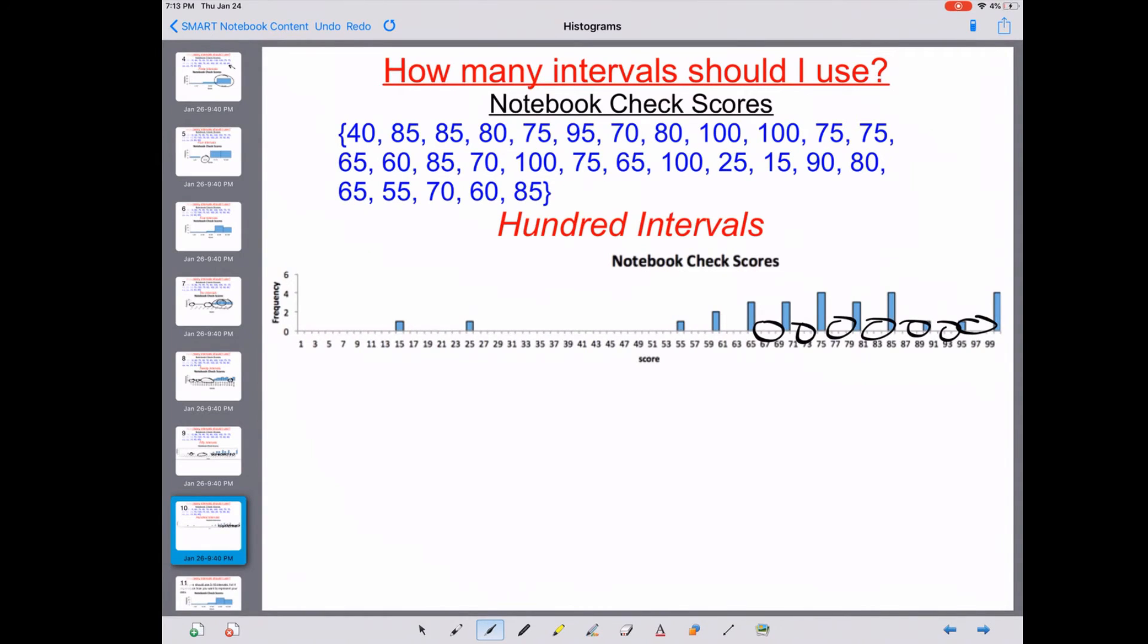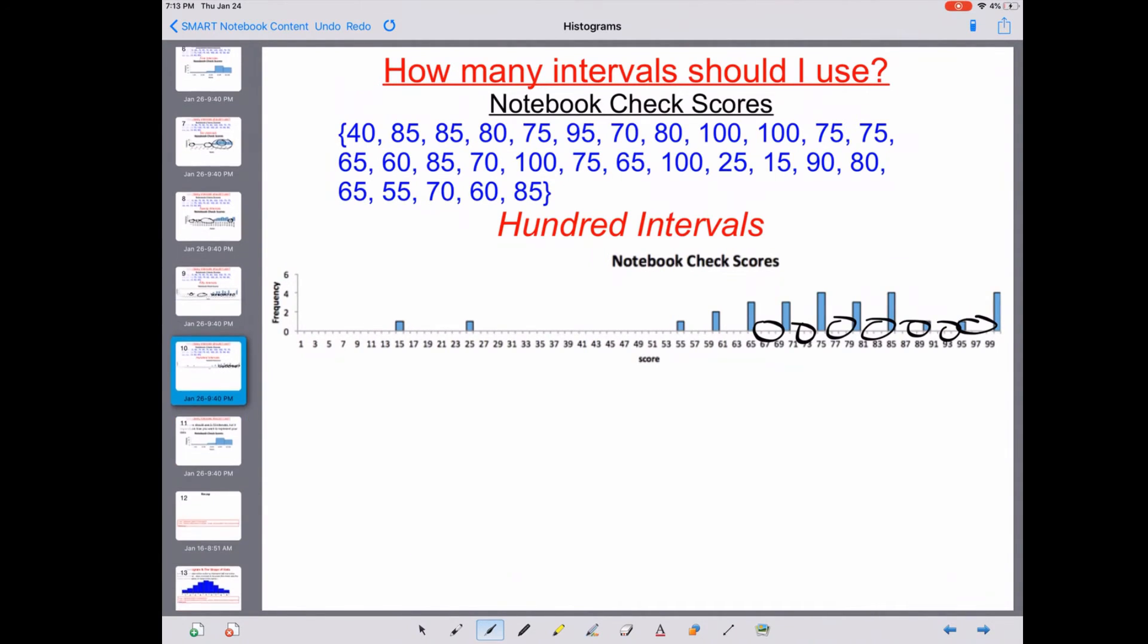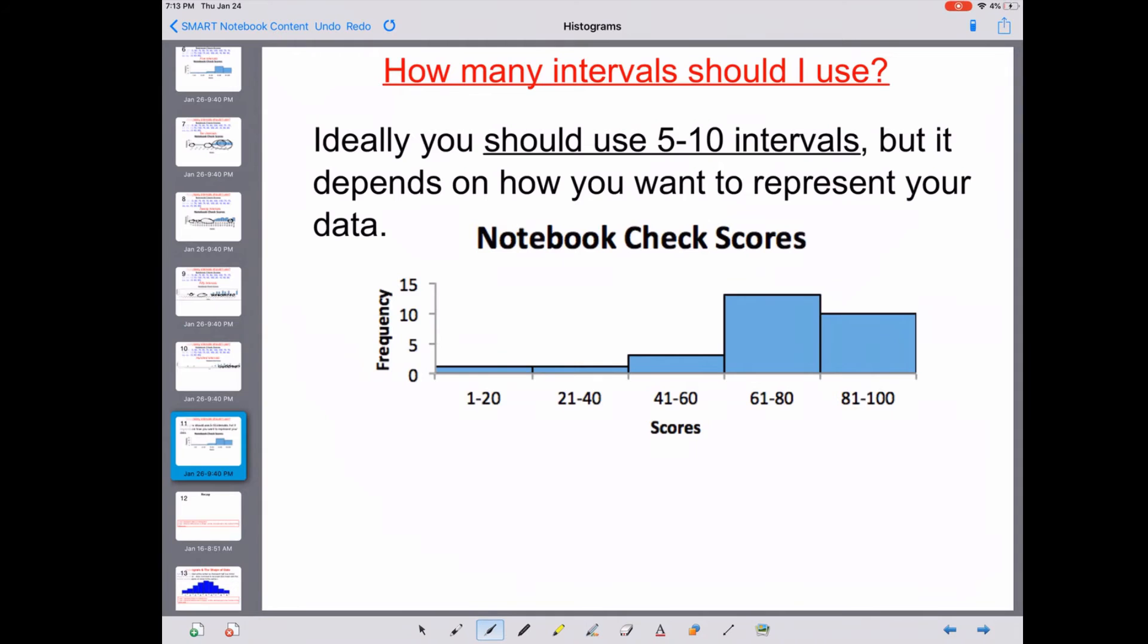So moral of the story, guys, is we want 5 to 10 intervals. You get to choose, but we really would like you guys to use 5 to 10 intervals. It makes the data fit together, it's actually possible to make the histogram, and it also displays the data nice and correct. So we would like to see 5 to 10 intervals in your histograms if we ask you to make one.